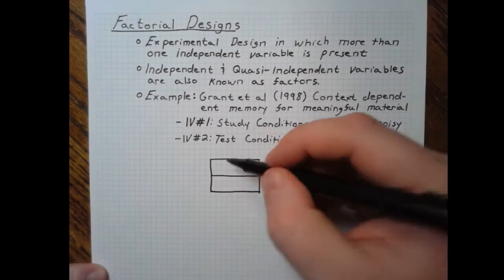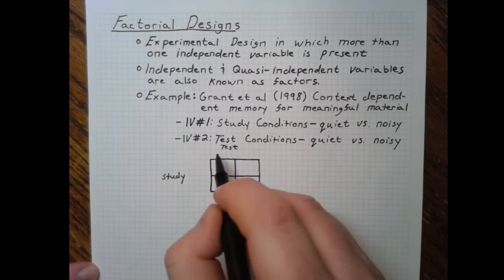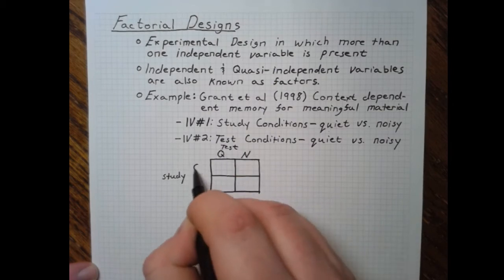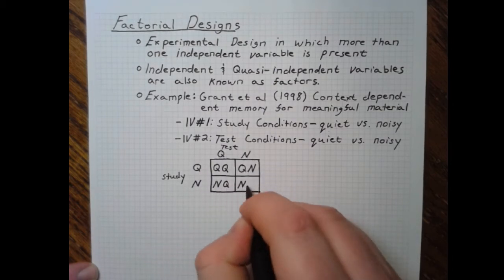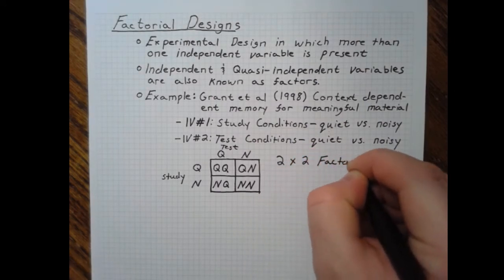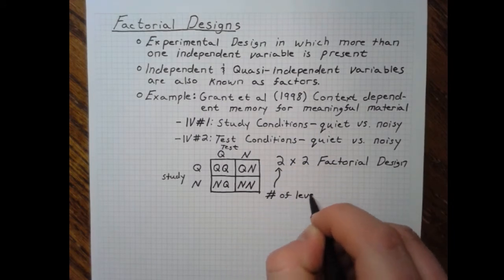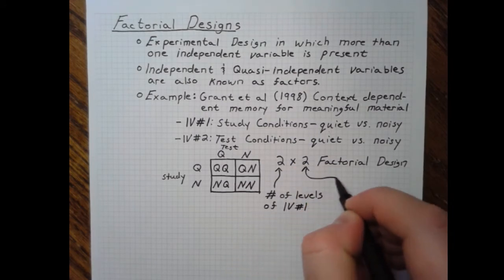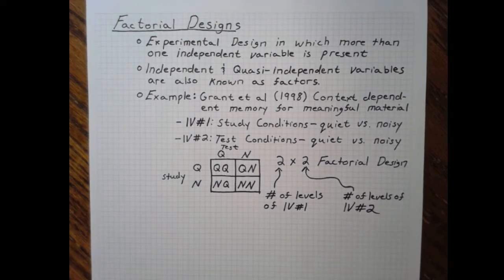With factorial designs, it's often helpful to diagram them out in a little matrix where on one side you have one independent variable — in this case, the test — and on the other side you have the study, so you can look at the different conditions this creates. This particular design can be further called a two-by-two factorial design, where each of these twos corresponds to an independent variable and the number of levels in that independent variable.